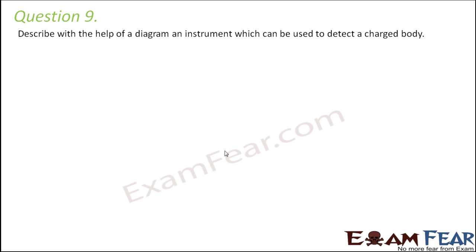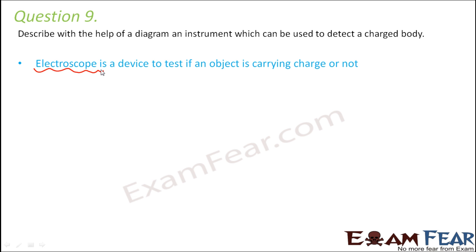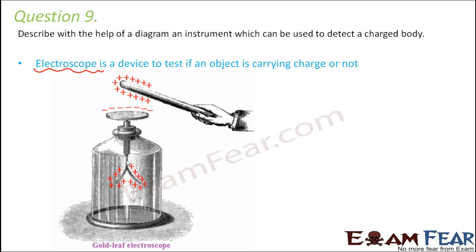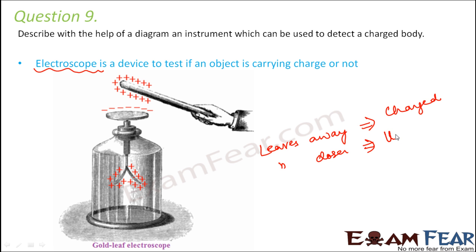Question number 9: Describe an instrument which can be used to detect a charged body. The electroscope is the device used to determine whether an object is charged or not. It has two metal leaves connected to a metal rod which is connected to a disc. When an object with positive charge touches the disc, the same positive charge is conducted to the leaves. Being metallic and carrying the same charge, the leaves repel each other and move away. If the leaves move away, the object is charged; if they come closer, the object is uncharged. This is the gold leaf electroscope, as the leaves are made of gold.